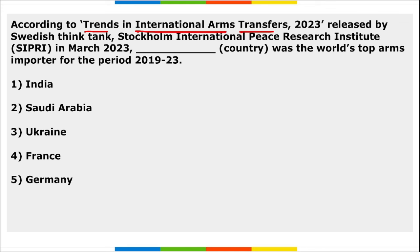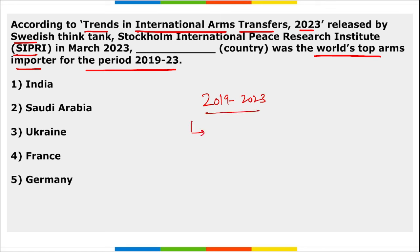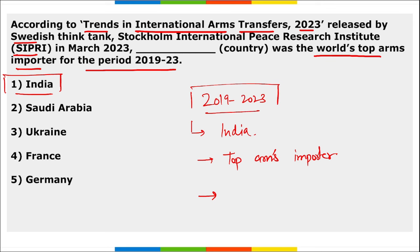According to the Trends in International Arms Transfer 2023 report released by Swedish think tank SIPRI in March 2023, India was the world's top arms importer for the period 2019 to 2023. India's import increased by 4.7% compared to the period 2014 to 2018. The USA, France, and Russia were the three largest exporters of arms during this period.